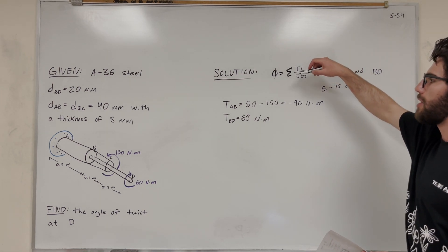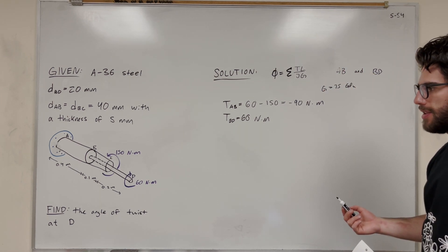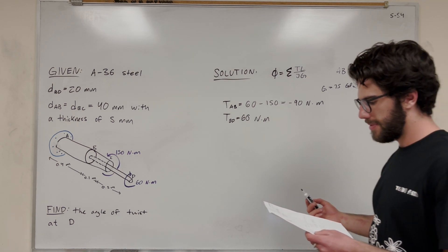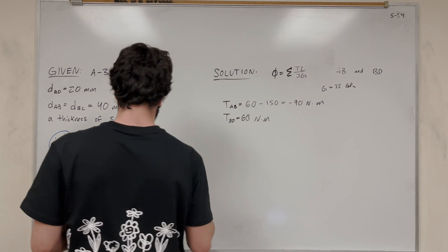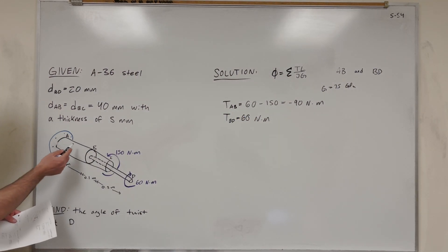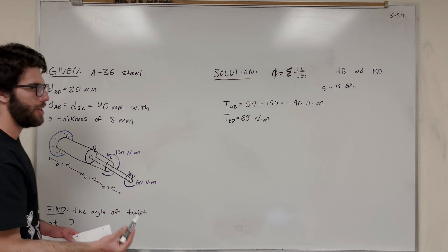We can find the lengths. Now let's find the polar moment of inertia. So the polar moment of inertia, there's going to be two different ones. There's going to be this thick rod that's hollow, and then we have this solid rod that's thinner. So we need to find them for both.